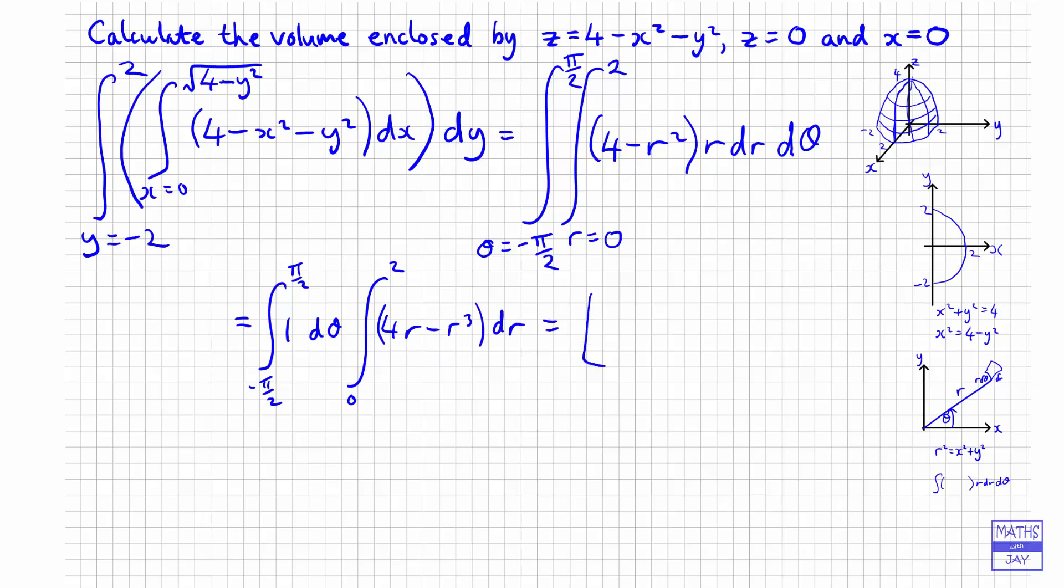So that gives us, well, integrating 1 with respect to theta will give us theta between minus pi by 2 and pi by 2. And then integrating 4r is 4r squared over 2. And integrating r cubed is r to the fourth over 4. And that's between 0 and 2.